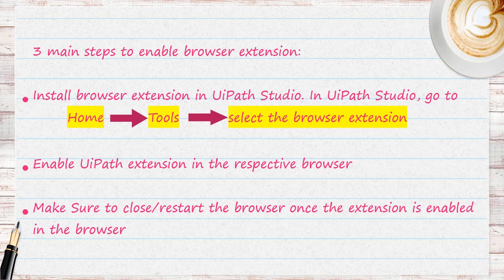However, if we have to do an automation in any other browser other than IE, then we need to make sure all the given three steps are performed. First, we need to install the browser extension in UiPath Studio. Then, we have to enable the UiPath extension in the respective browser. And last, we have to close or restart the browser so that all the changes are available.